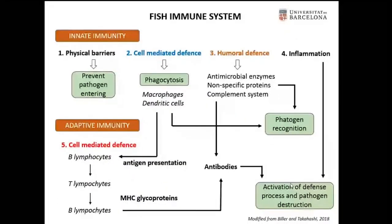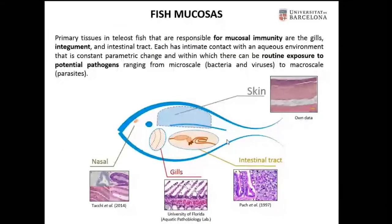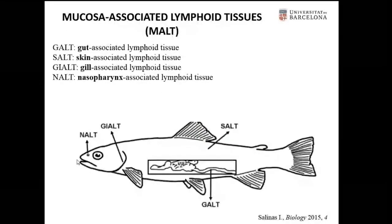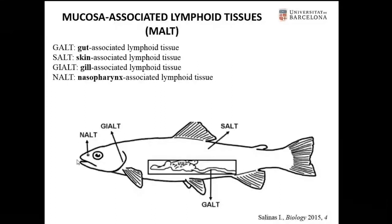I have shown and tried to explain a very reduced version of the immune system, which is of course more complex. Focusing on the mucosal system, we recognize the skin mucosa, the gill mucosa, the digestive mucosa, and even the nasal fringes mucosa. They are in intimate contact with the aqueous environment, which can be constantly changing and contain a number of potential pathogens. To maintain whole body homeostasis, these mucosal barriers are armed with mucosal-associated lymphoid tissues, containing both innate and adaptive components.